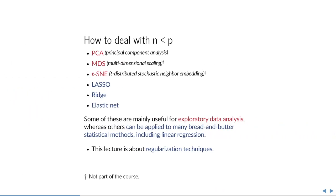We've already talked about one way to deal with high-dimensional data: PCA, or principal component analysis — a very useful exploratory data tool. It can be generalized to MDS (multidimensional scaling). A very recent technique gaining traction is t-SNE, T-Distributed Stochastic Neighbor Embedding. All of these methods are very useful for quickly summarizing high-dimensional data. But sometimes you want to do more than summarizing, and that's where the techniques of this lecture come in.